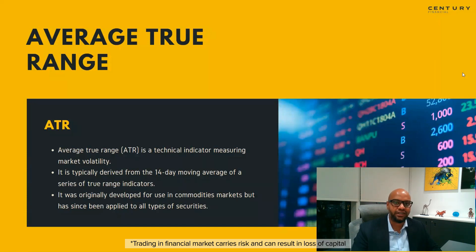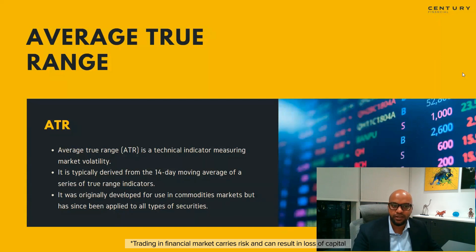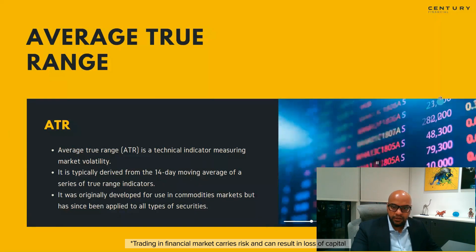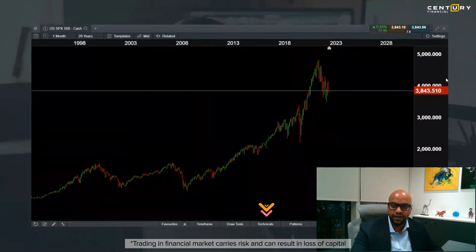One thing to keep in mind: ATR does not determine the direction of the move. It only tells you, based on previous daily movement, how many dollars an instrument can move. For example, gold can move about $5 every day. Today it may be up $5, tomorrow down $5, day after down another $5, and three days later up $5 again. If every day gold moves about $5, that becomes your Average True Range.